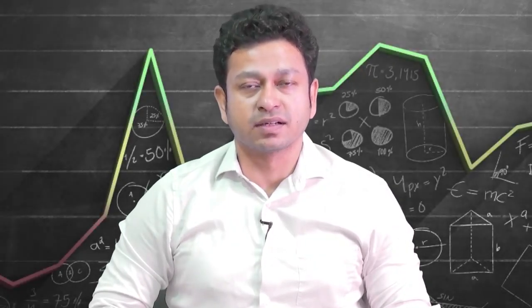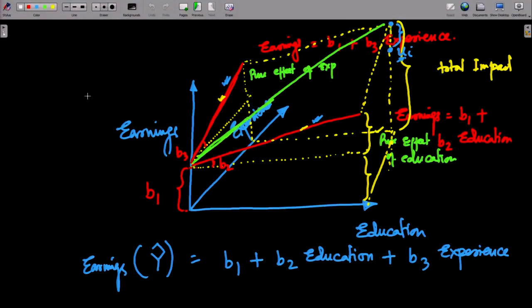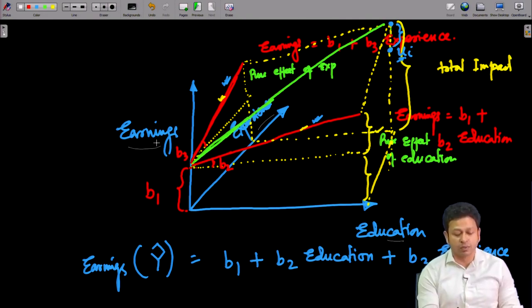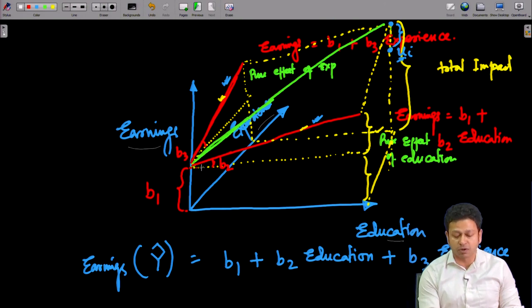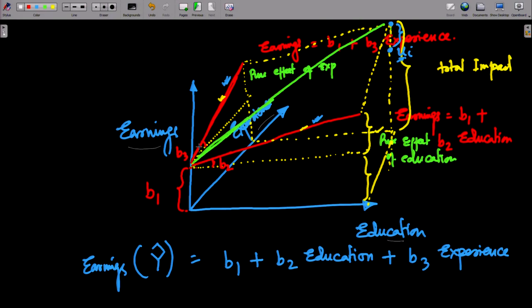Hello and welcome back to the lecture on Applied Econometrics. We have been talking about multiple regression. In the last lecture, we showed how multiple regression can be visualized with different explanatory variables. We had education and experience as our explanatory variables and earnings as our dependent variable — two independent variables and one dependent variable — and I showed how to represent that regression equation as a plane, drawing lines corresponding to education and earnings to get the resultant plane. That was the visual depiction of this whole idea.